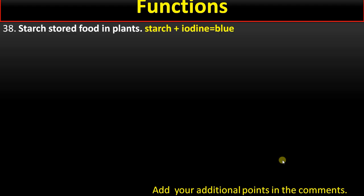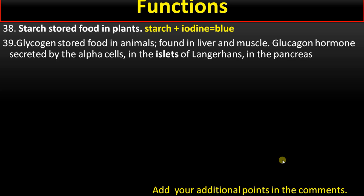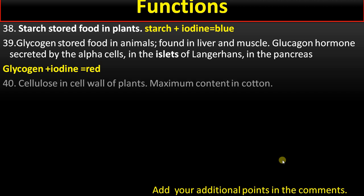Point number 38: starch is stored food in plants; starch + iodine gives a blue color. Glycogen is stored food in animals, found primarily in the liver and in small amounts in muscles. Glucagon is a hormone secreted by alpha cells in the islets of Langerhans in the pancreas and is involved in glycogen metabolism. Glycogen reacts with iodine giving a red-brown color.